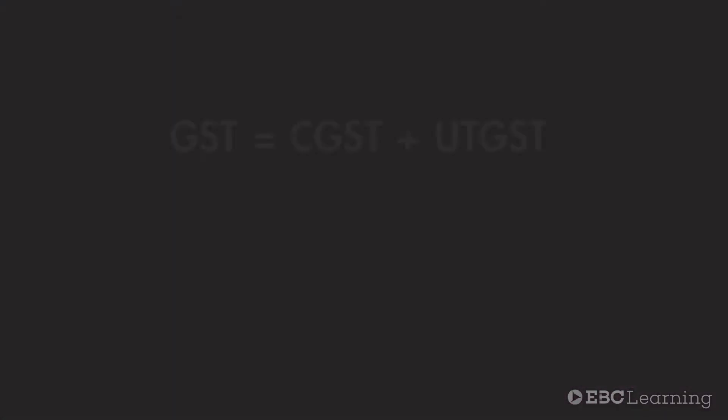But what will happen if the dealer and purchasers are in Chandigarh? In this case, the GST share of the Union Territory is known as Union Territory Goods and Services Tax, or UTGST. Here the GST has two components: CGST and UTGST.